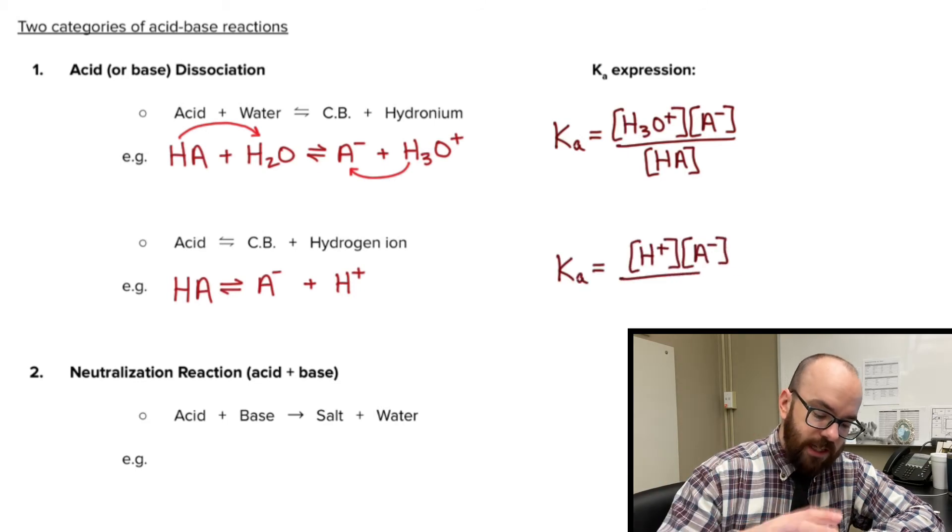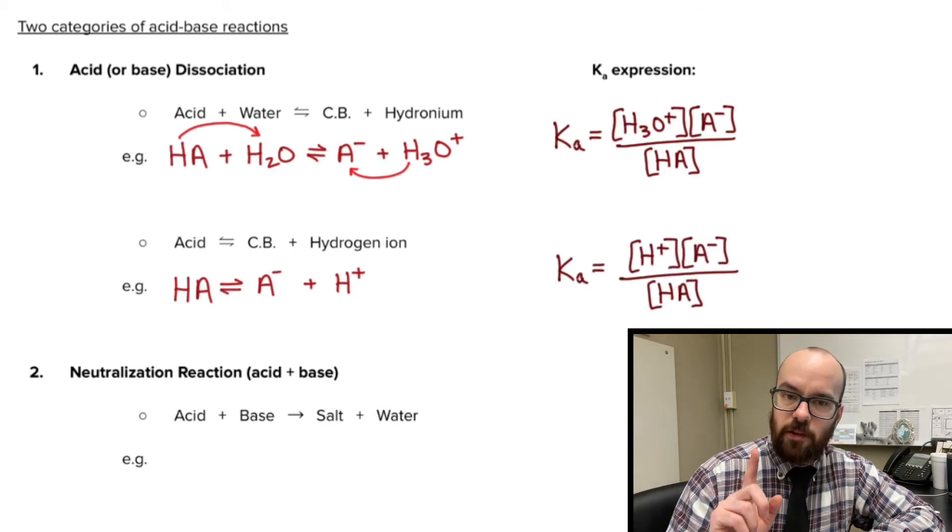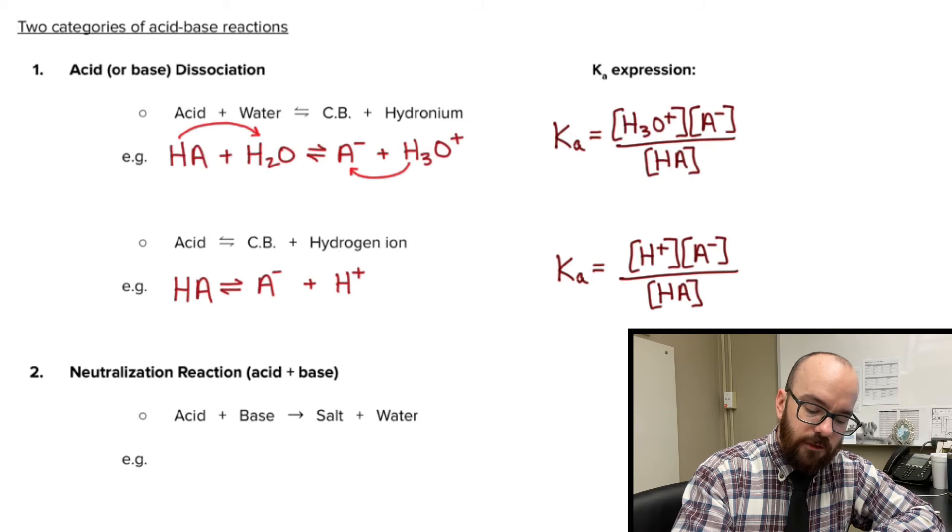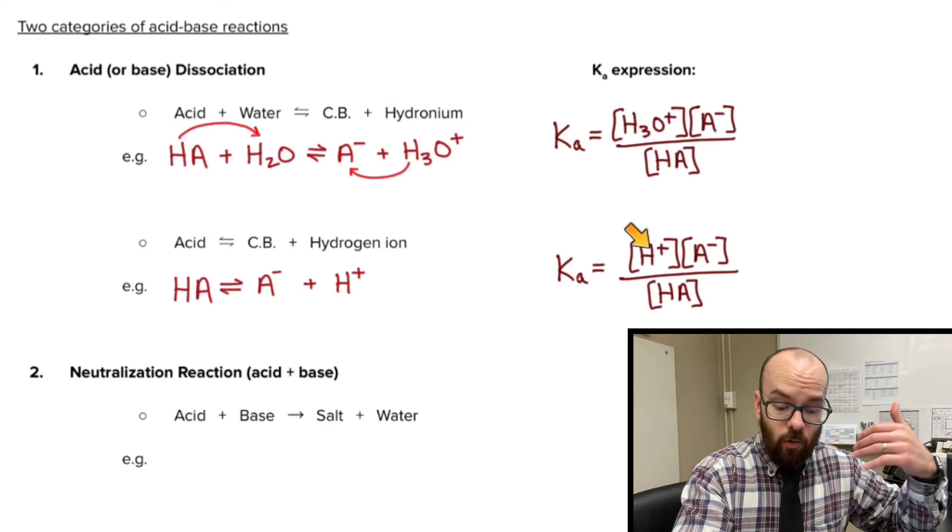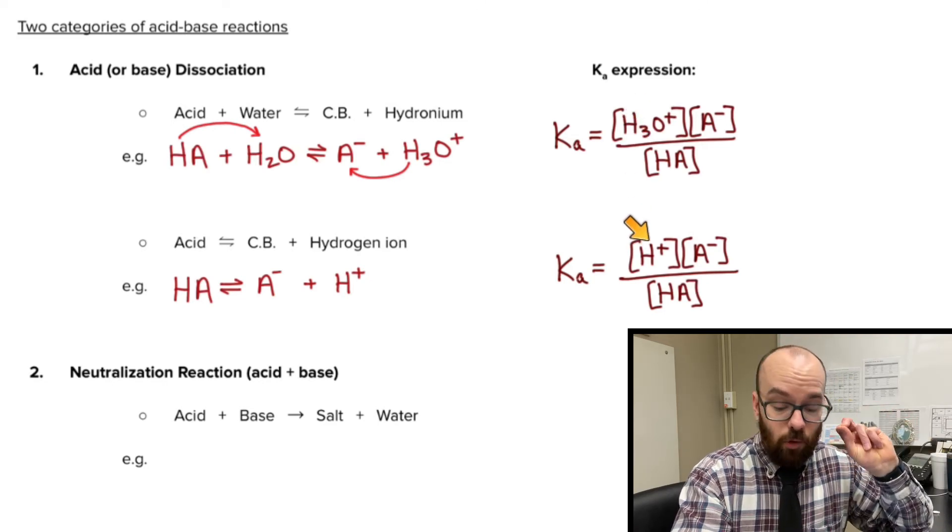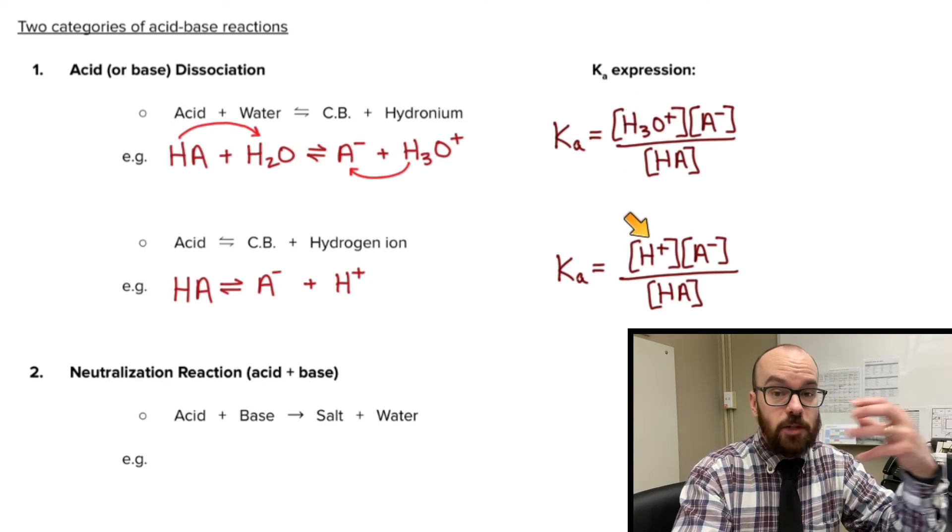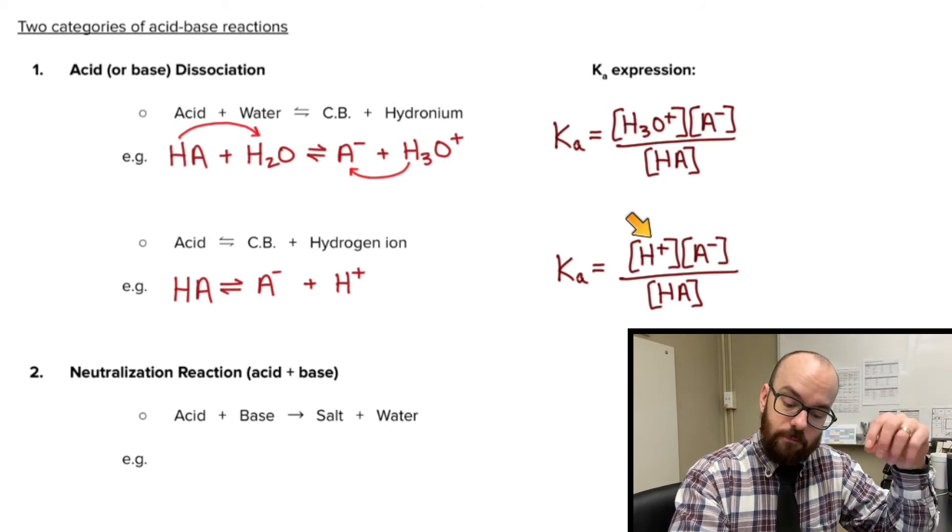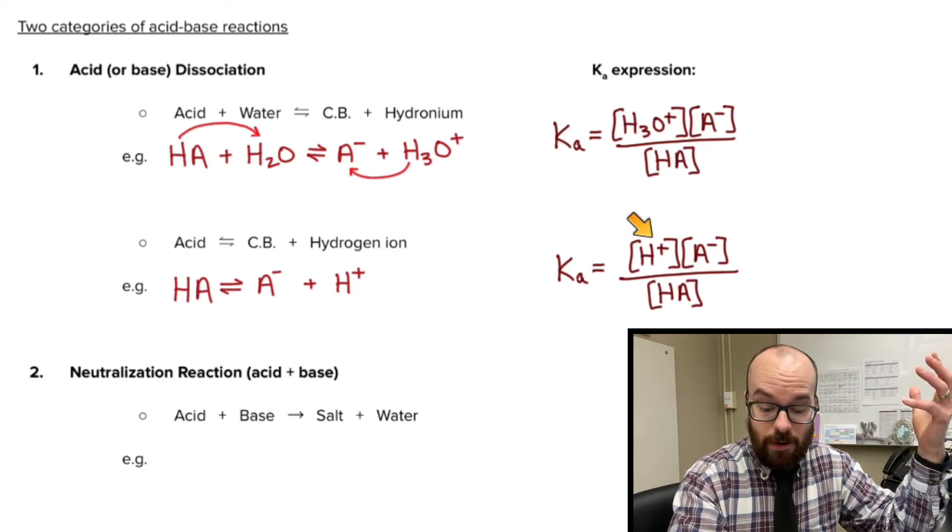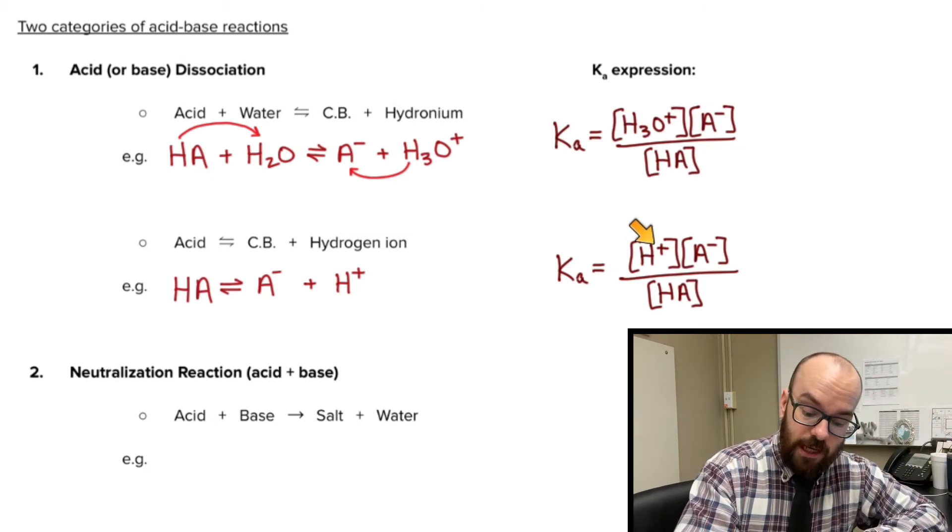And if we write the Ka expression for our second way to write this, we get something that looks very similar. The only difference between these two is that this one has an H+, whereas this one has hydronium. But remember, what does H+ actually mean? When in reality, like we said, it's not just H+ floating around in solution. It's really H3O+, but it's quicker for us to write H+, and it works for all the problems that we solve.